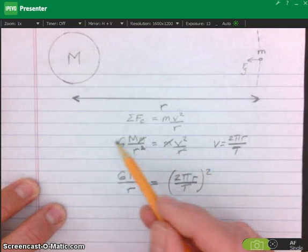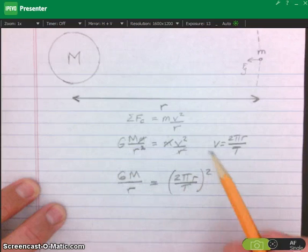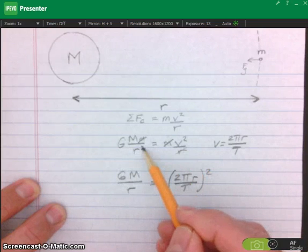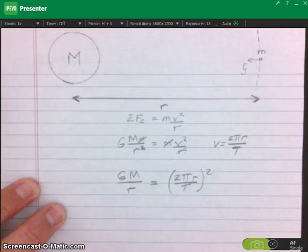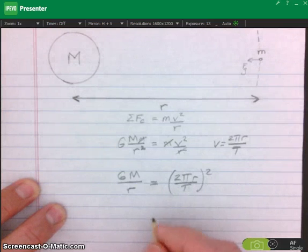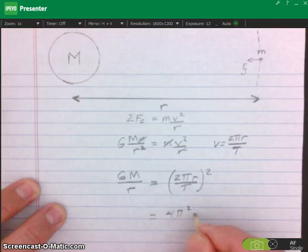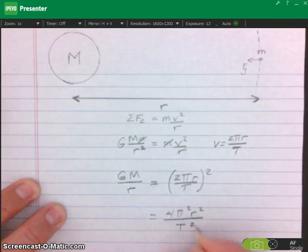Again, I multiply both sides of the equation by lowercase R. Cancelled this, cancelled that. Now at this point, I'm going to have to square all the factors that are inside the parentheses. So I have 4 pi squared R squared over T squared.